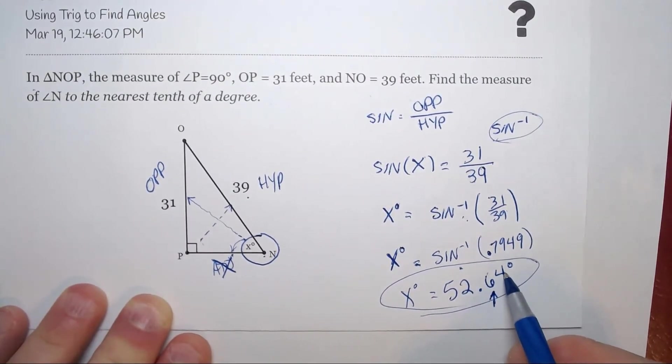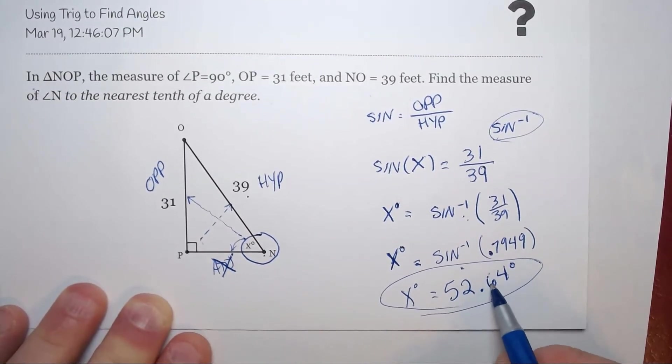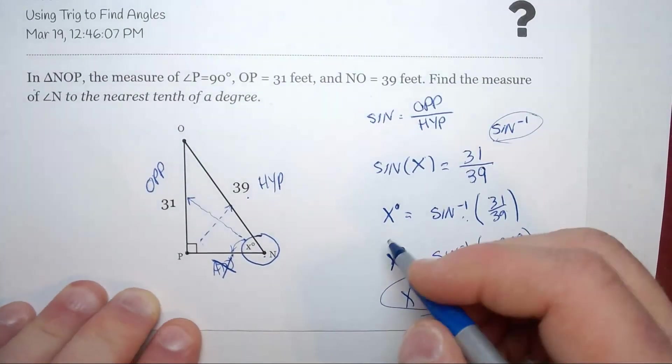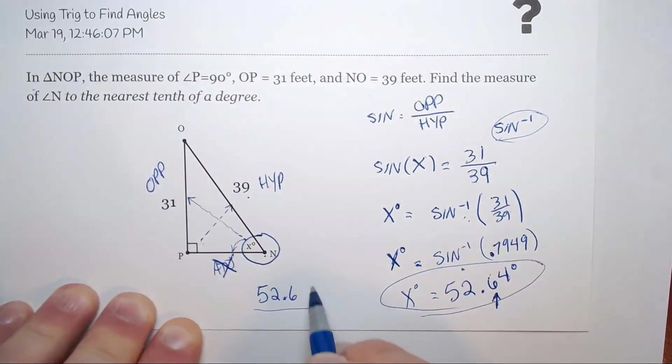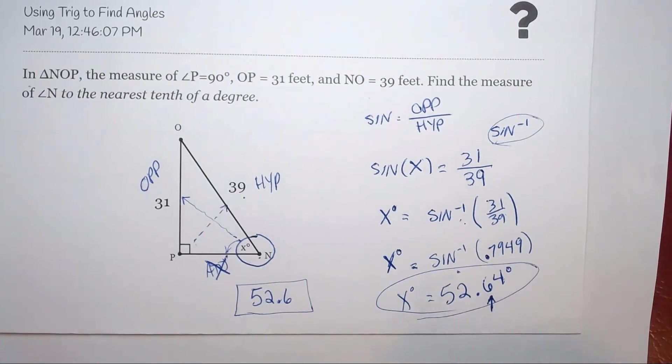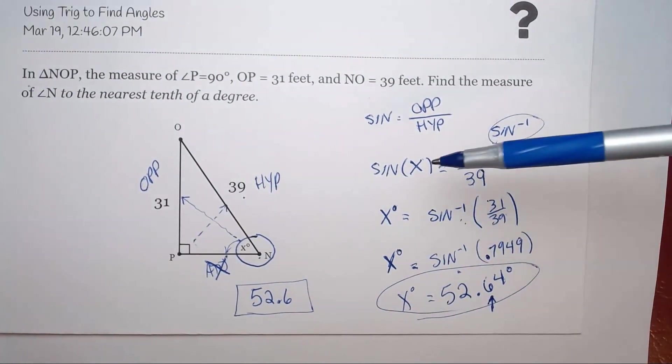We look at the digit next. The four is less than five, so this would remain 52.6. So the answer you would actually put in Delta Math is 52.6. And that's how you find a missing angle in these triangles.